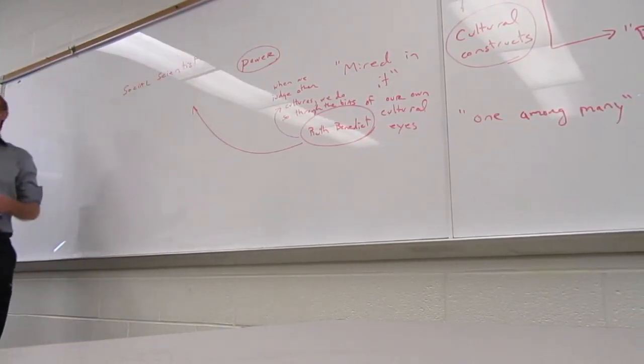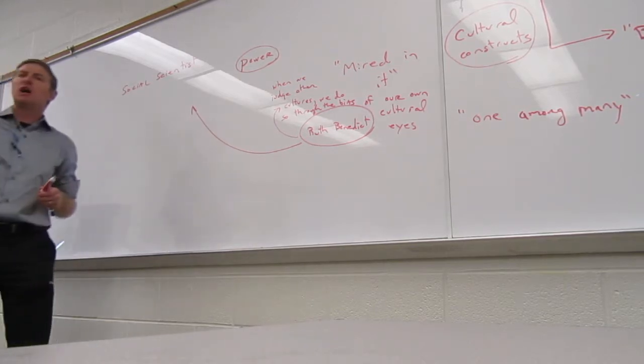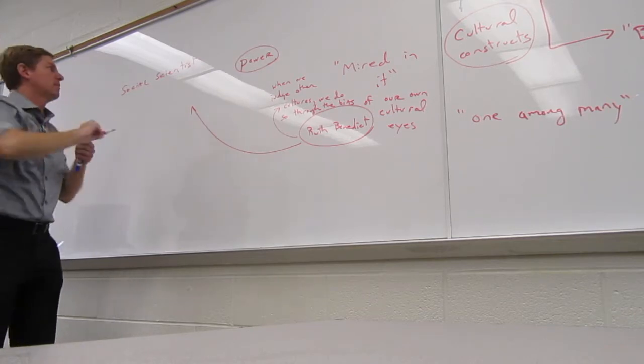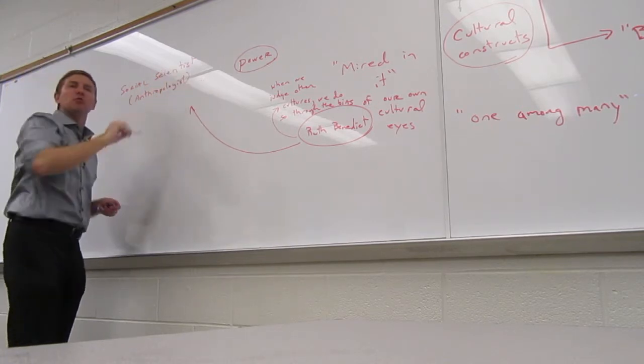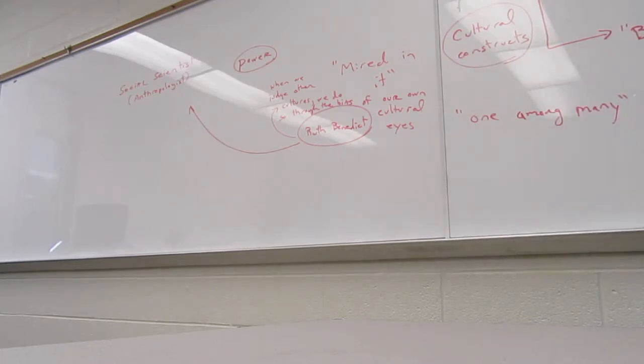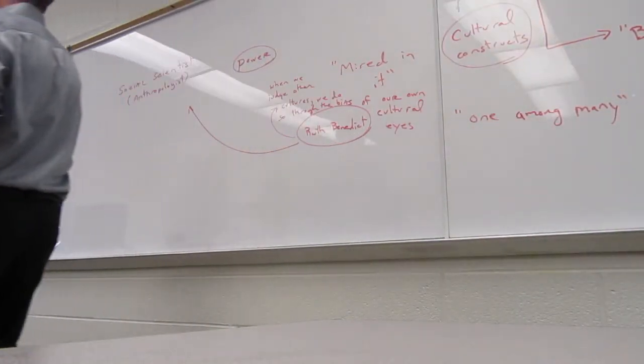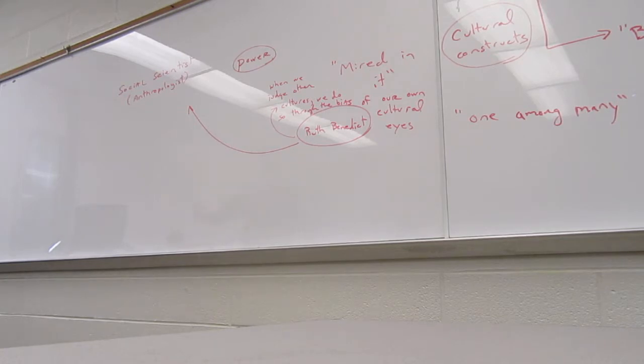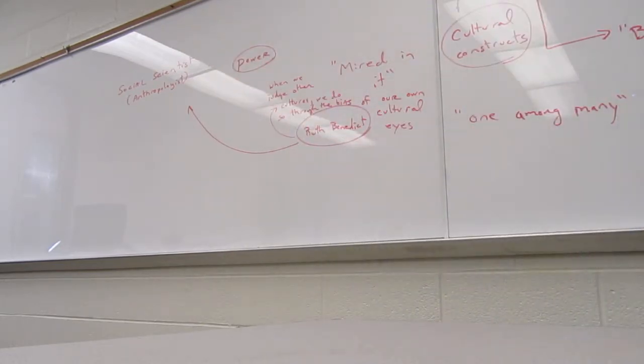Ladies and gentlemen, Ruth Benedict was a social scientist. Specifically, what area of social science? She was an American anthropologist. This ideal of anthropology came out of the 19th century. That if you're truly going to study a culture, and study it in earnest, as an objective scientist would, what can't you bring into your study? Your bias. You can't bring in your biases.